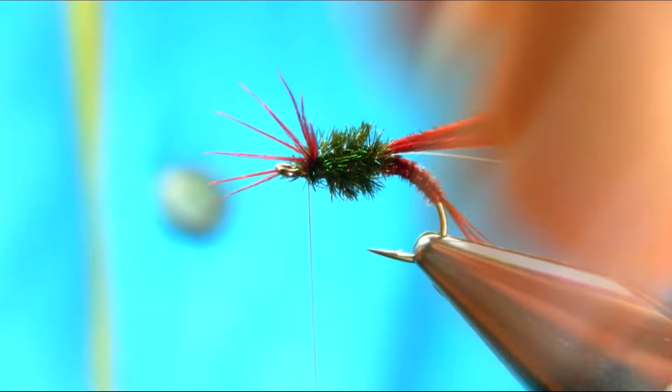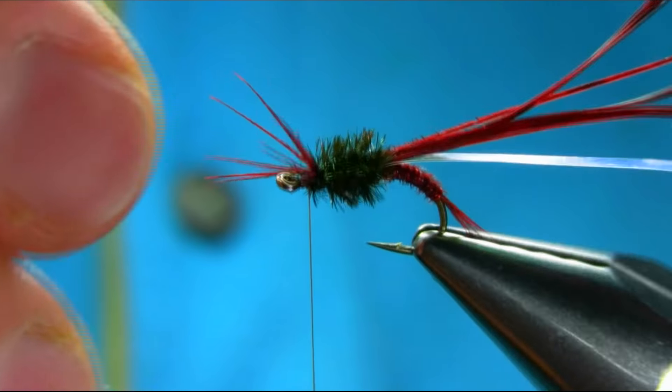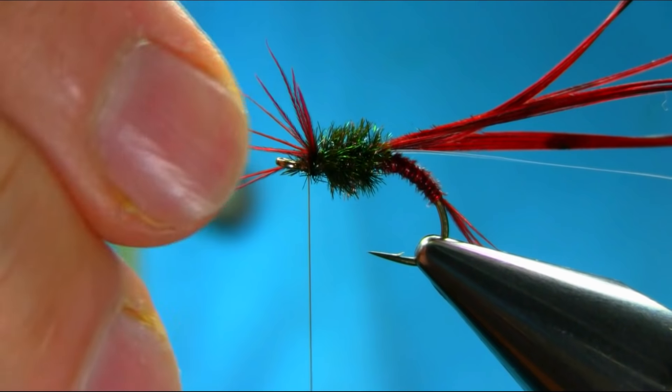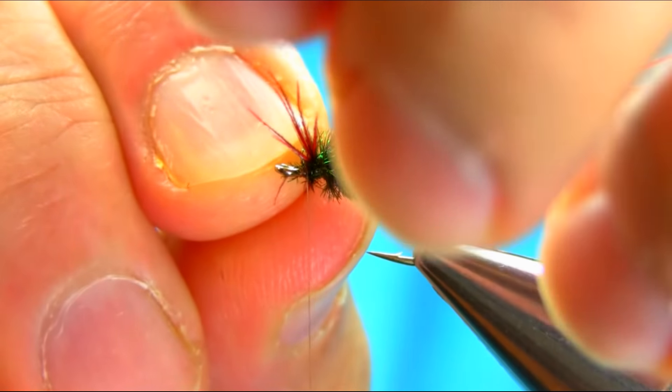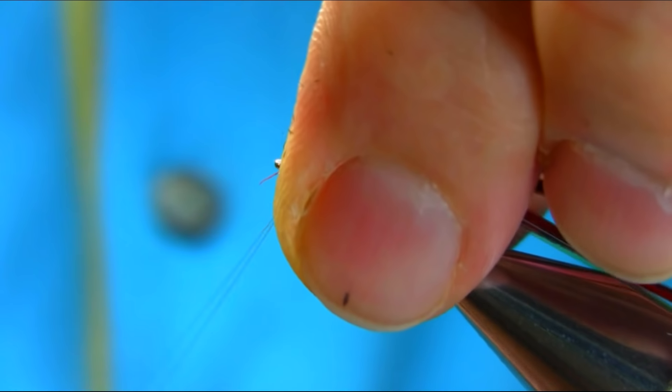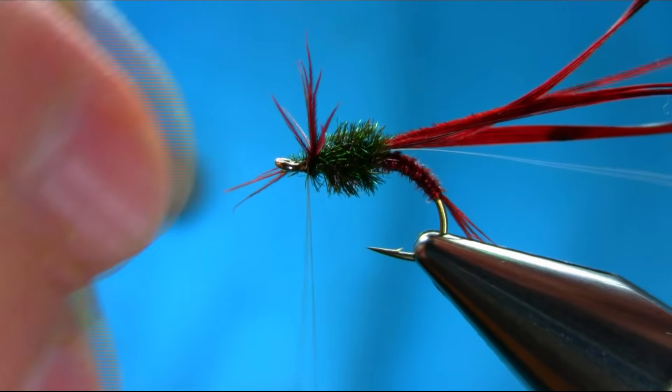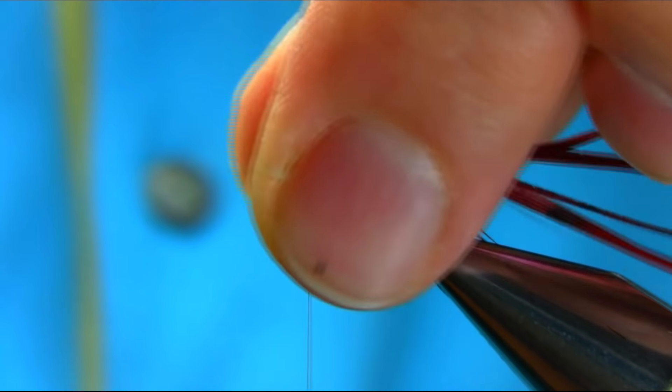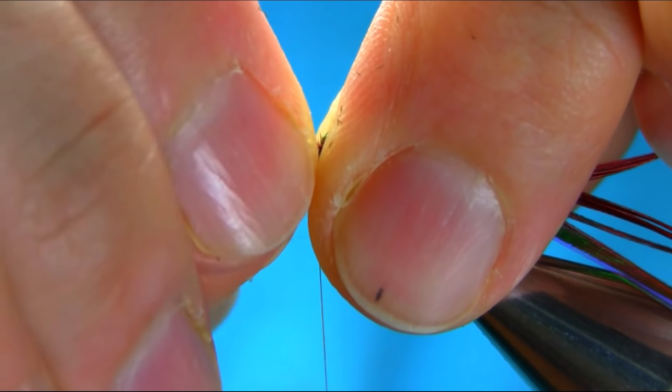Now the next thing you have to do is just split these front fibers on either side of the hook, just to represent some legs. Equally. It doesn't have to be precise, just to see how they look when they're sitting in the water.